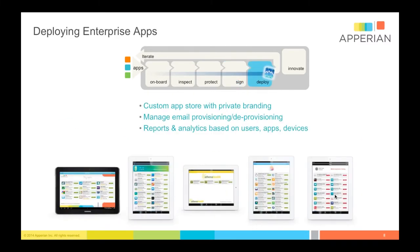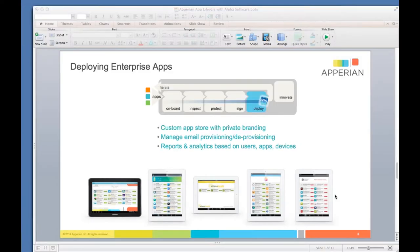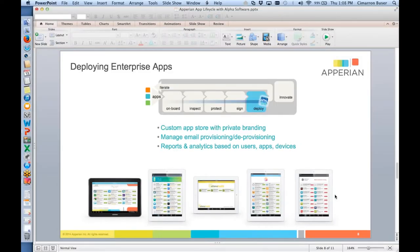In summary, we have a complete solution for deploying enterprise apps — from onboarding, inspection, and policy management to credentialing or signing, and deployment. We do that in a way that's very easy for a developer or others to use. What I'd like to do now is show you, in about the next ten minutes, an end-to-end demonstration of how we would do this with an actual Alpha Software app.